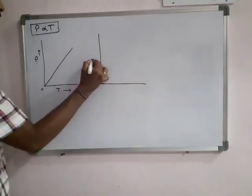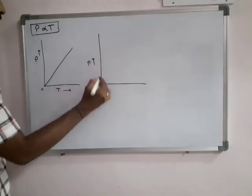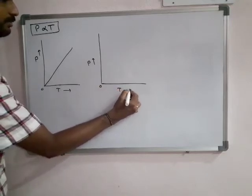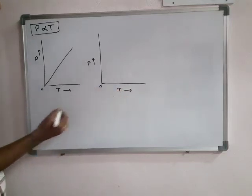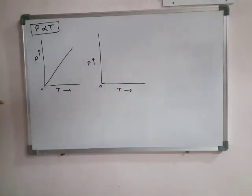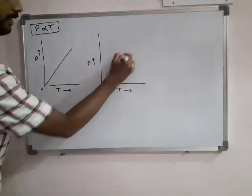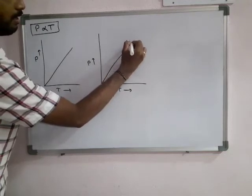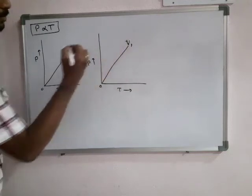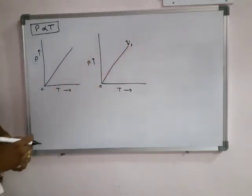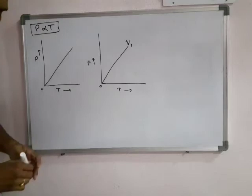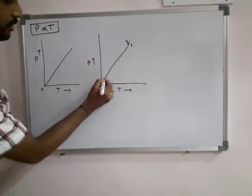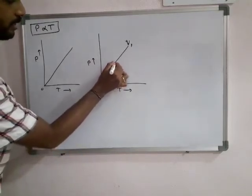On the y-axis take pressure and on the x-axis take absolute temperature. For a particular constant volume V1, you get a line here. By doing the experiment we get points at these positions, giving an exactly straight line. By changing the volume value and repeating the same experiment, taking V2, we get another line.